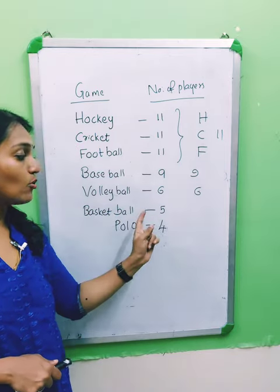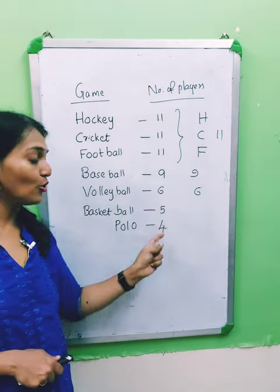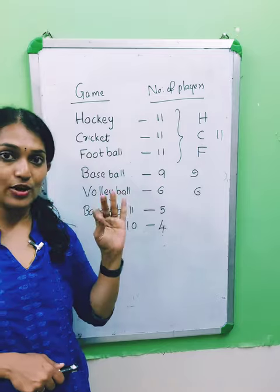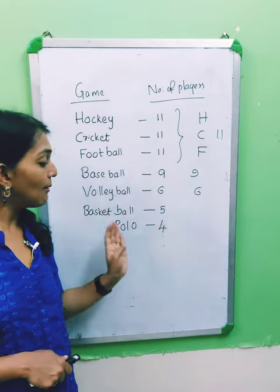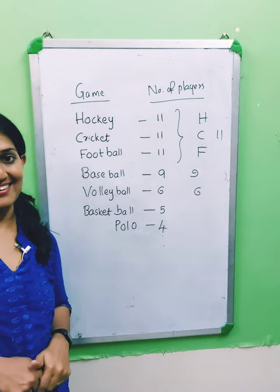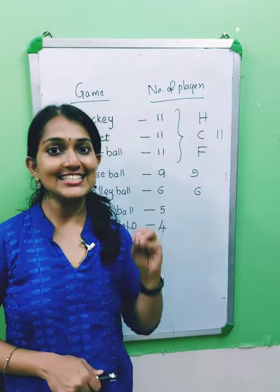In basketball there are 5 players, and in polo there are 4 players. Now let's find the H.C.F.